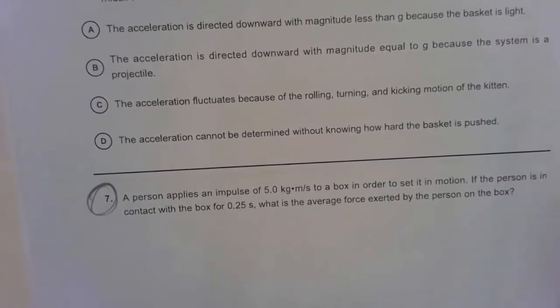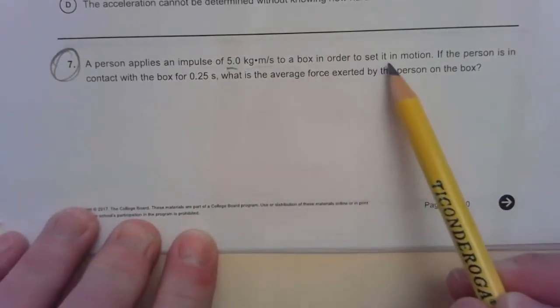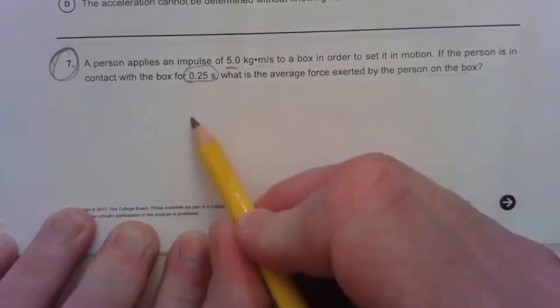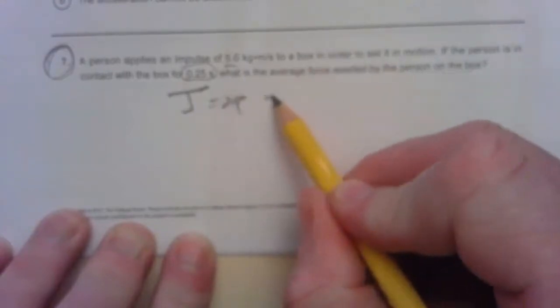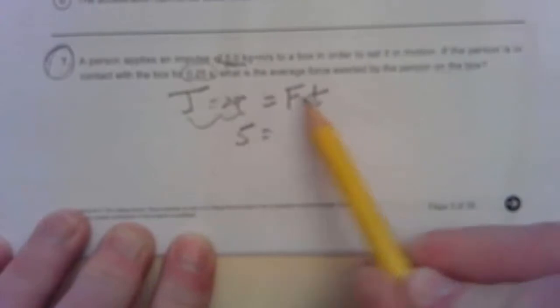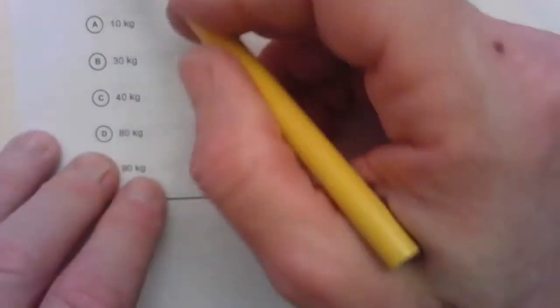All right. Number seven is the next one. A person applies an impulse of five kilogram meters per second to a box in order to set it in motion. If the person is in contact with the box for that long, what is the average force exerted? It's fairly straightforward. If you know that impulse is force times time, then this is pretty straightforward. Impulse is five. The time is 0.25 and they want to know the force. So I just divide and get, 0.25 is 5 times 4. It's 20. So it should be 20 newtons is the force. The average force. For number seven, that would be answer D. And that is what my answer says correct as well. So check. So far, so good.